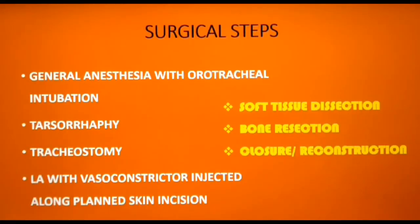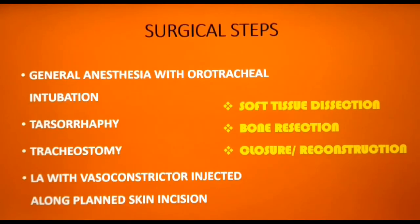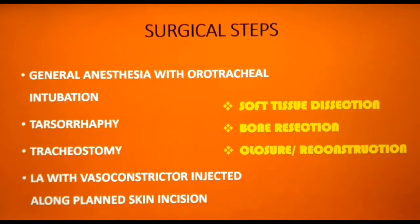Prior to surgery, a computed tomography of the maxillofacial region is done. It is an important means of determining the superior, posterior, lateral, and medial extent of the tumor and the resection required. Once a tumor involves the orbital fat or muscle, orbital exenteration is recommended. The superior extent of the surgery is the orbit and the roof of the ethmoid, the posterior extent is the pterygoid plates, and the lateral extent is the zygoma and infratemporal fossa.